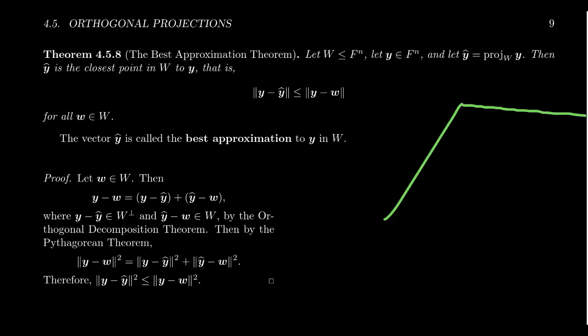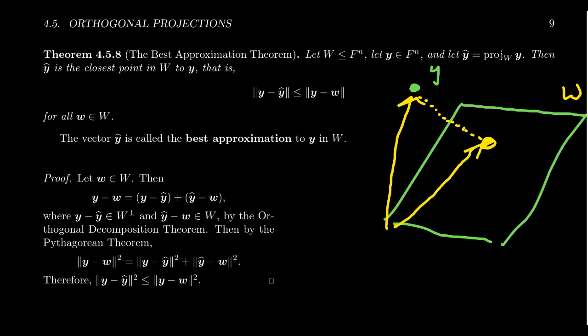Let's say W is a plane in R^3, and we have our point y, which lives here, which we can think of as a vector. Maybe we see something like this, this arrow pointing towards it. Well, the closest point that's going to live in W to y is going to be this orthogonal projection down here, y-hat. The closest point in W is this orthogonal projection.